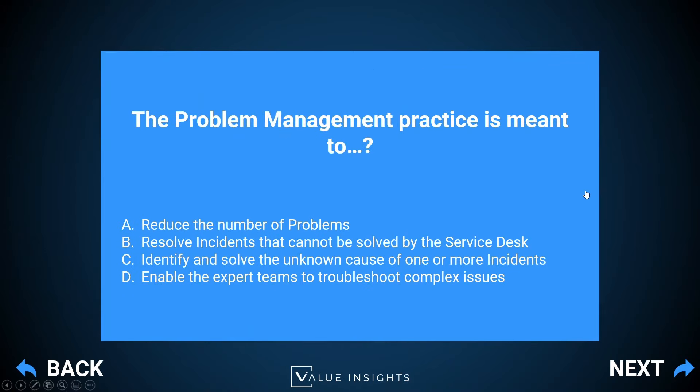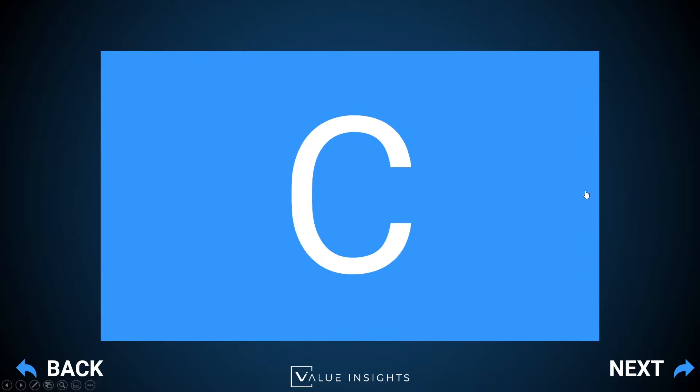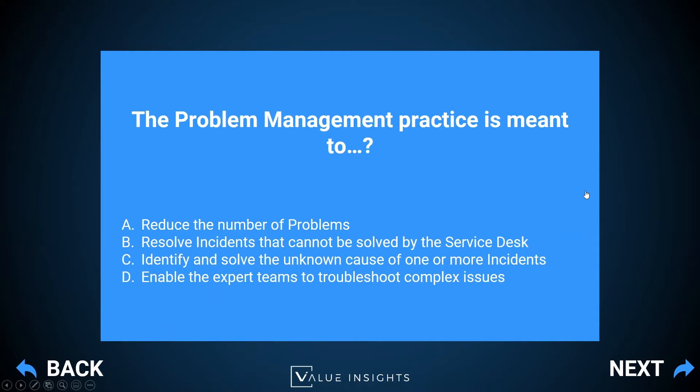The next question: the problem management practice is meant to do what exactly? The correct answer is C — identify and solve the unknown cause of one or more incidents. That is the definition: a problem is the unknown cause of one or more incidents, and the problem management practice is meant to identify and solve those problems to make sure they never happen again, reducing the number of recurring incidents. Option A says reduce the number of problems — that's not the goal. The goal is to identify root causes and ensure that incidents resulting from these problems do not reoccur.